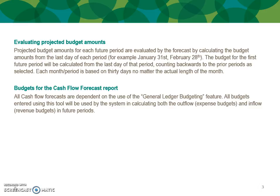Evaluating Project Budget Amounts: Projected budget amounts for each future period are evaluated by the forecast by calculating the budget amounts from the last day of each period — for example, January 31st through February 28th. The budget for the first future period will be calculated from the last day of that period, counting backwards to the prior periods as selected. Each period is based on 30 days, no matter the actual length of the month.